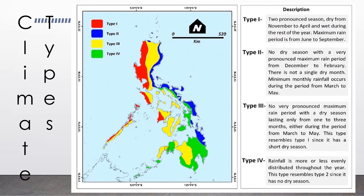For Type 1, there are two pronounced seasons: dry from November to April and wet during the rest of the year, with maximum rainfall experienced from June to September. For Type 2, there is no dry season with a very pronounced maximum rain period from December to February. There is not a single dry month, and minimum monthly rainfall occurs during the period from March to May.